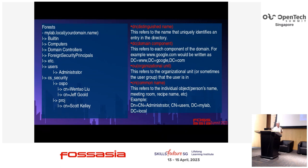On the right side you can see some basic concepts. The first one is distinguished name, the second one is domain component, the third one is organization unit, and the last one is common name. We need to know these concepts because in your configuration file you need to put all of these connection strings, otherwise the integration process will be painful.